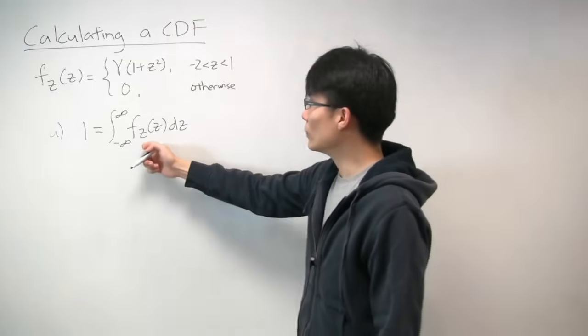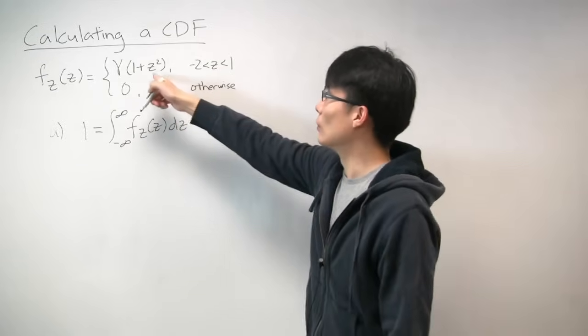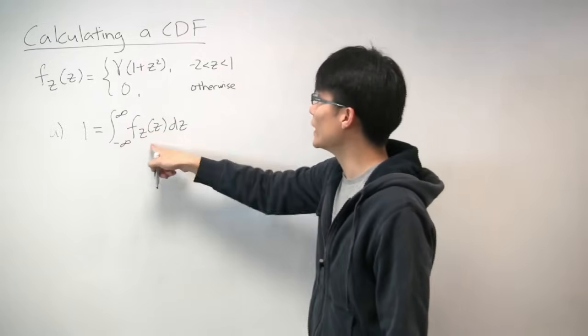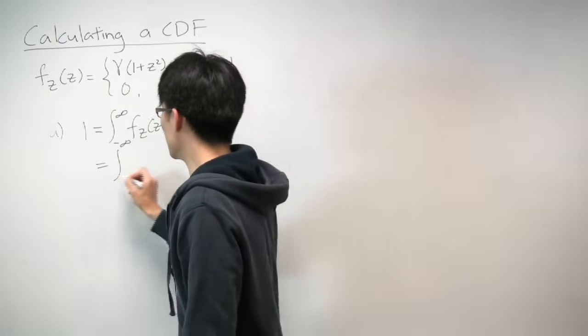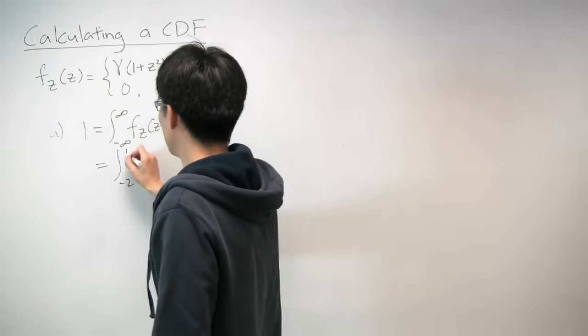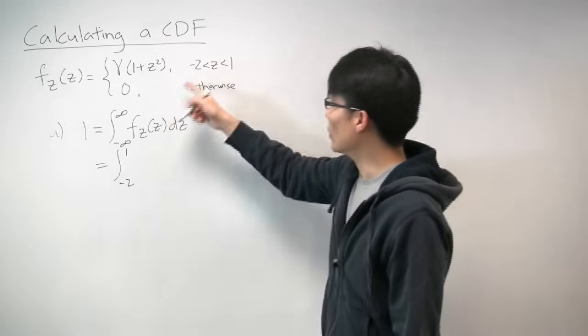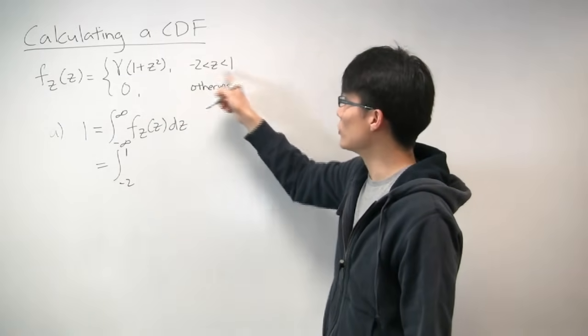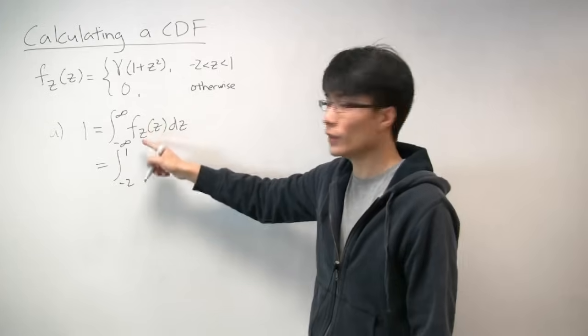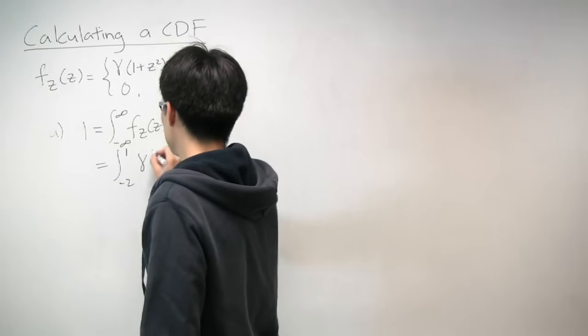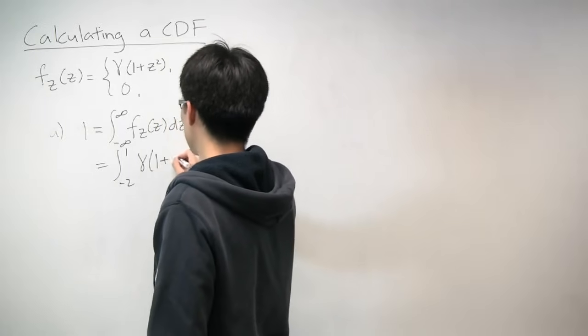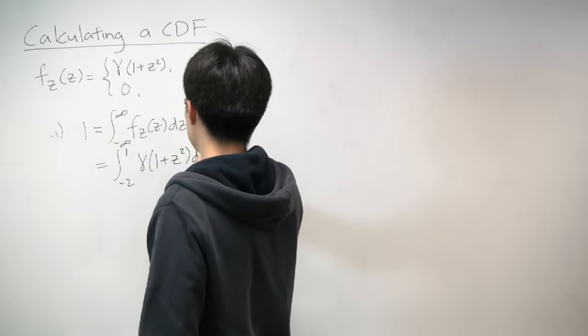So what do we do now? Well, we know what the PDF is, well, partially, except for gamma. So let's plug that in. And the first thing that we'll do is we'll simplify this, because we know that the PDF is actually only non-zero in the range negative 2 to 1. So instead of integrating from negative infinity to infinity, we'll just integrate from negative 2 to 1. And now let's plug in this gamma times 1 plus z squared dz.